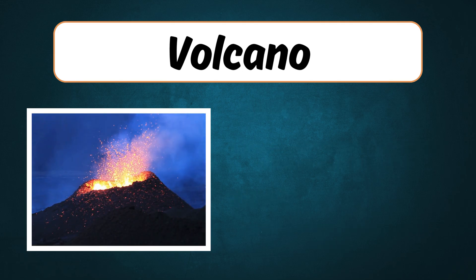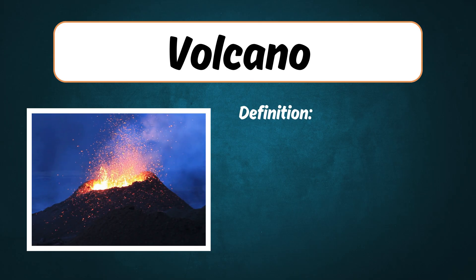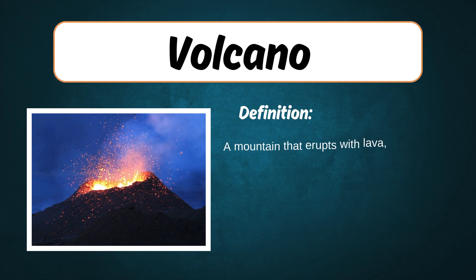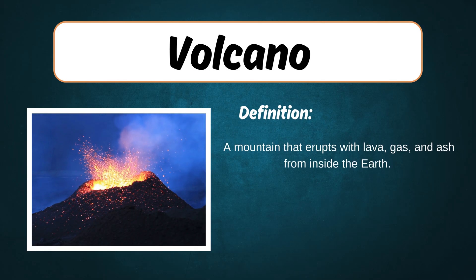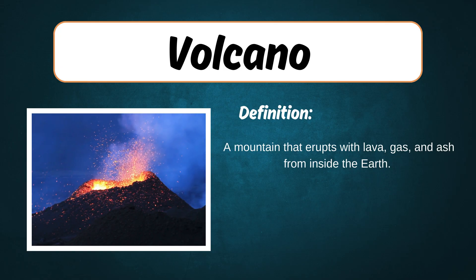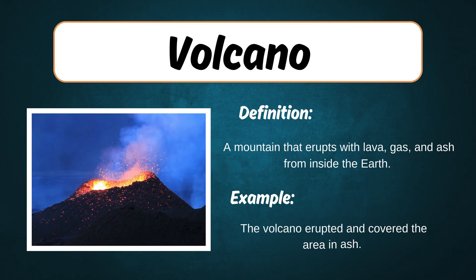Volcano. Definition: A mountain that erupts with lava, gas, and ash from inside the earth. Example: The volcano erupted and covered the area in ash.